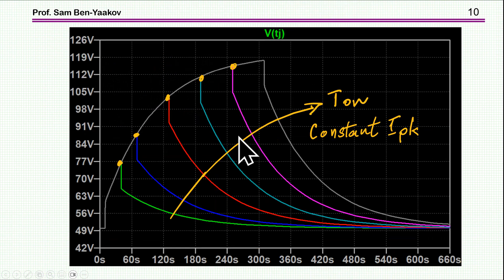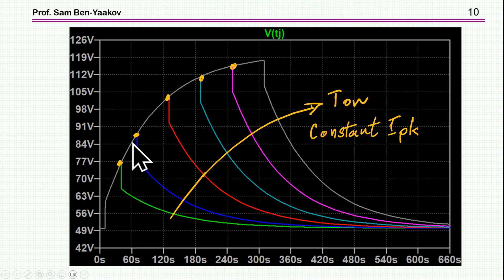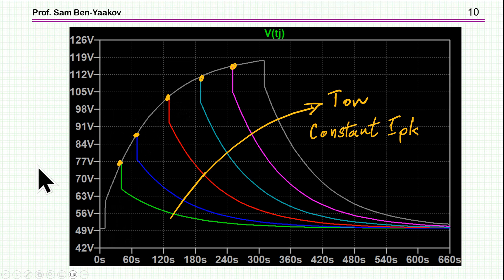You can get a lot of information with this model when you already have the heatsink. For example, you can see here what is the maximum temperature reached for different pulse widths — like 30 seconds, 60 seconds, and 120 seconds — and the corresponding junction temperature.